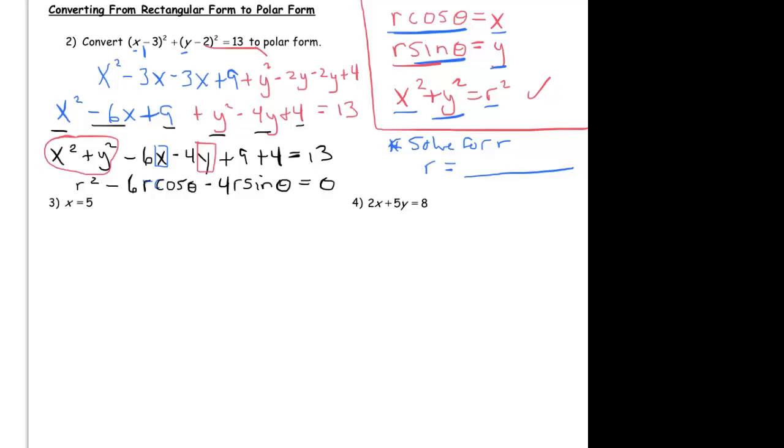So x squared plus y squared minus 6x minus 4y plus 9 plus 4 equals 13. And this is where the identities come in, because now I've got my x squared plus y squared which I know is r squared, so I can just write this as r squared.